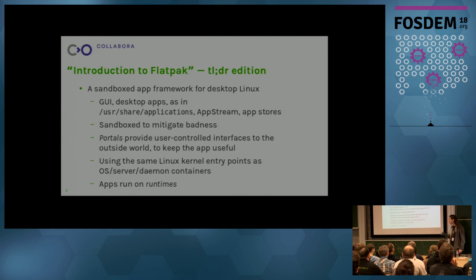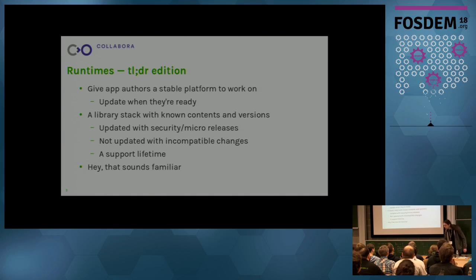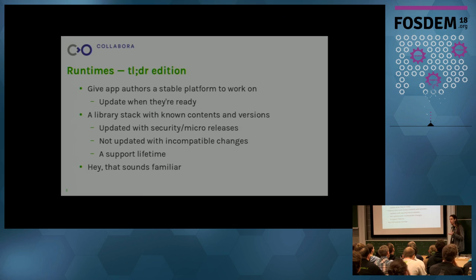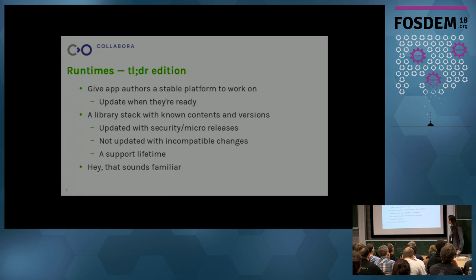The thing that is important for how these relate to distributions is that an app runs on a runtime. The idea of a runtime is: a Linux distribution is fine as a stable platform, but if you want your app to run on Debian and Fedora, and Debian from this year and also Debian from five years ago, you don't really know what you're going to get. So a runtime is like the API compatibility levels you have in Android, where you can say this app is going to run on a specific runtime, and the infrastructure gives you an appropriate runtime. So the app author gets to choose when they update.